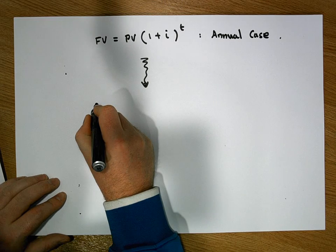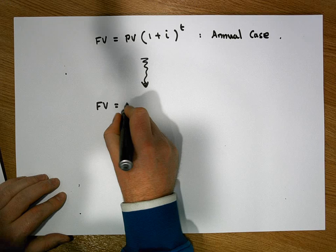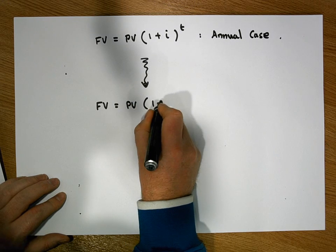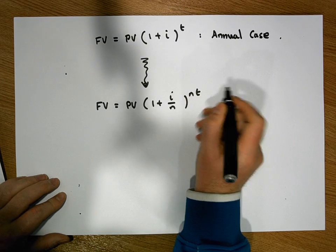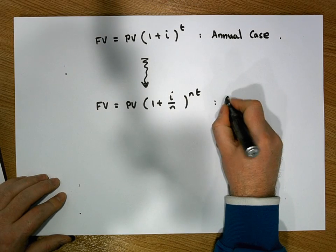To the future value is equal to the principal value times 1 plus I over N raised to the power of N times T. And this is our general compounding.